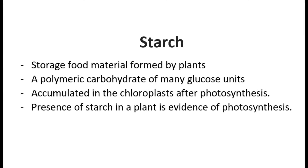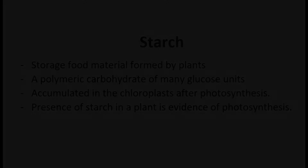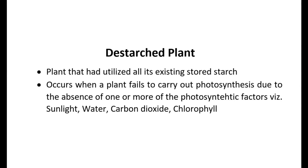Starch is eventually formed as a reserve food by plants at the end of a photosynthetic process. If a plant is stripped of any one or all of the vital factors necessary for it to carry on photosynthesis, then photosynthesis immediately ceases to occur in that plant. As a result, the plant starts utilizing its existing reserve food stored in the form of starch. Eventually, the plant would have used up all its remaining stored starch and become what is known as a de-starch plant.